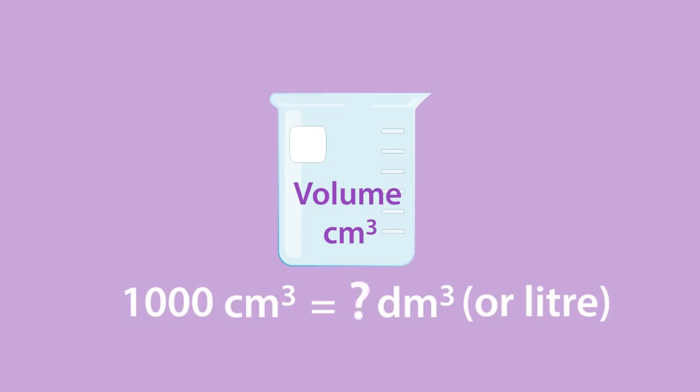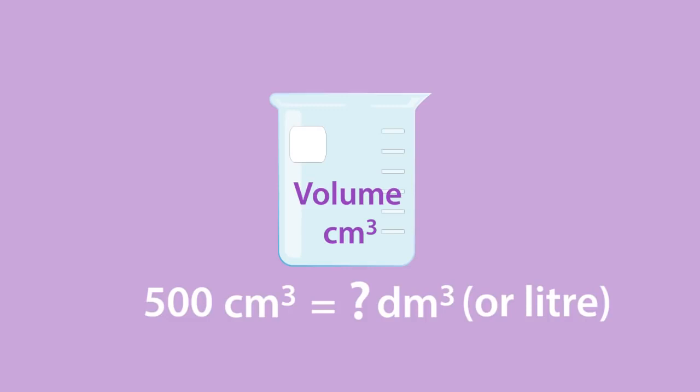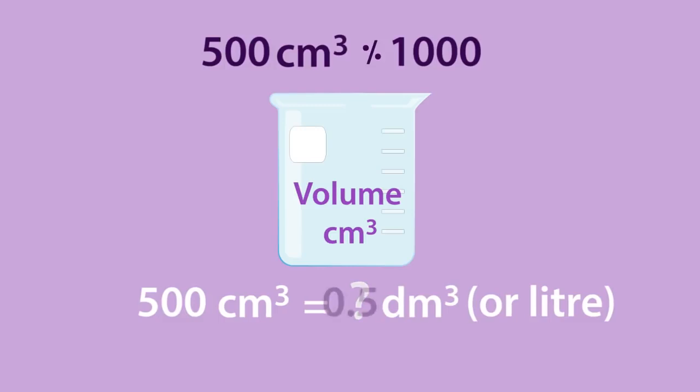So, how many decimeter cubed is 500 cubic centimeters? Pause, think and continue when ready. To get the answer, you need to divide 500 cubic centimeters by 1000. So 500 cubic centimeters is the same as 0.5 decimeter cubed. Did you get it right?